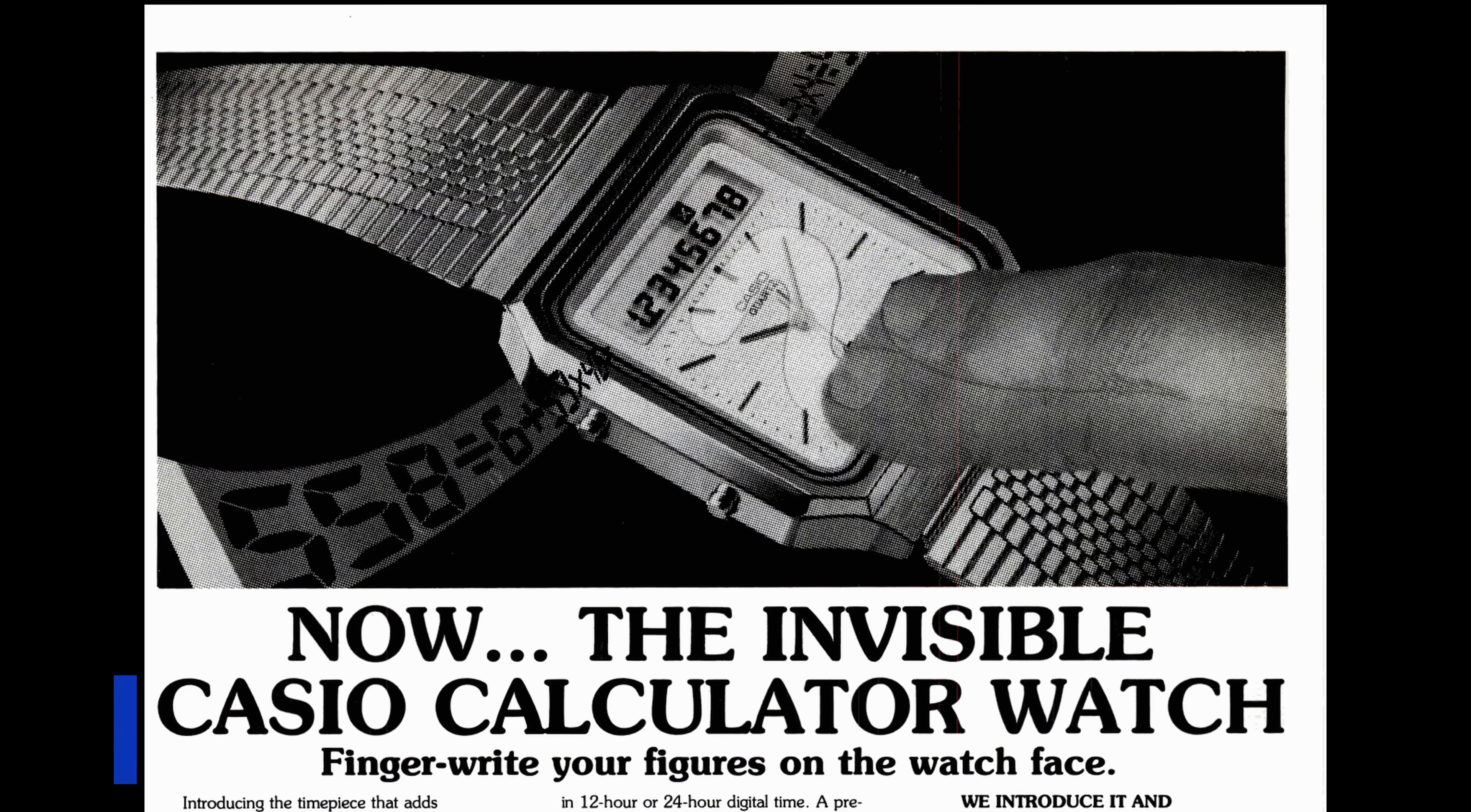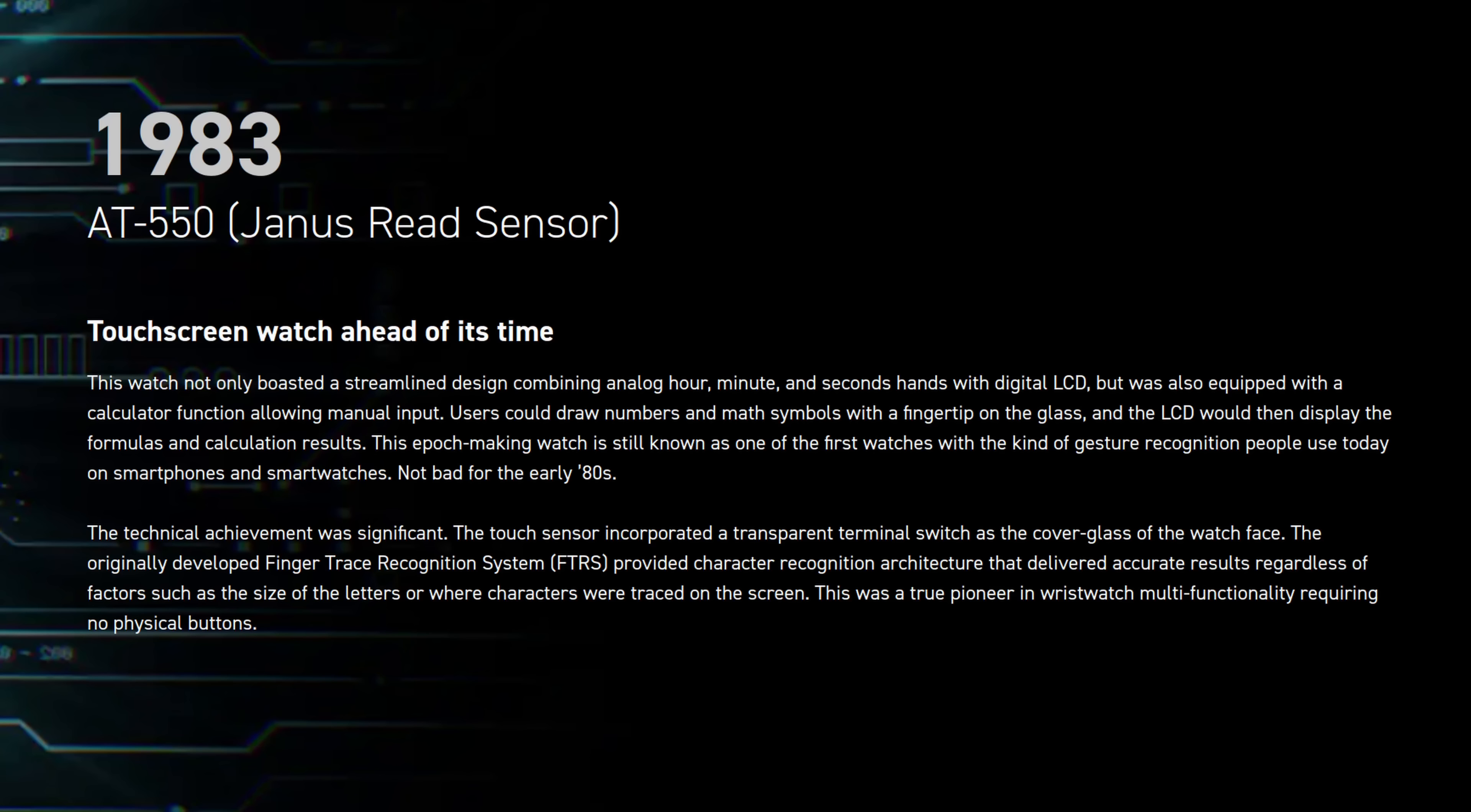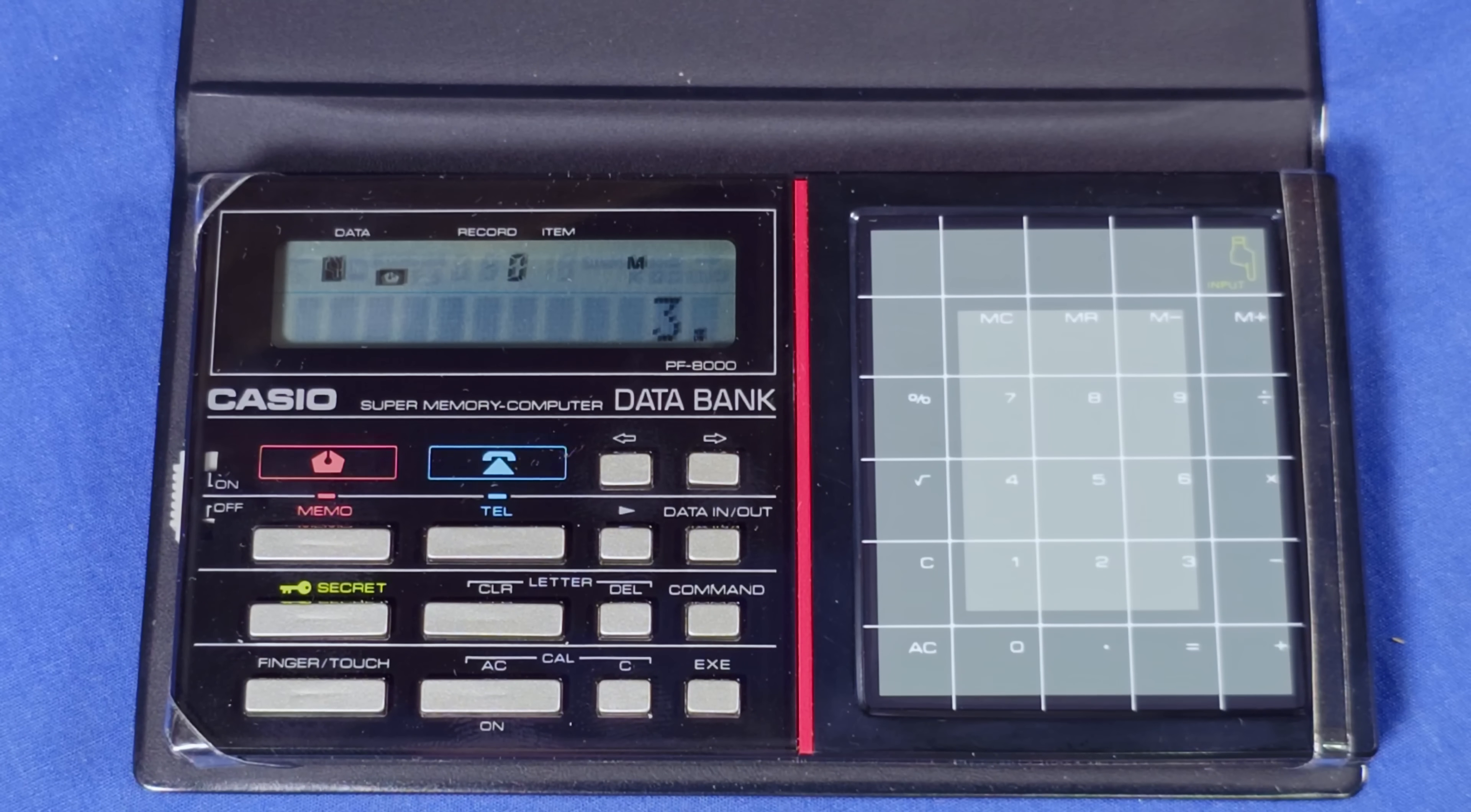Unlike the PF8000 though, the touch element technically does overlap with the display. It just also overlaps all of the surface that is not the display. This watch is sometimes cited as the first portable touchscreen device, but it is just reusing the technology from the PF8000 and the actual touch area over the display is just a few cells.